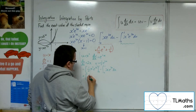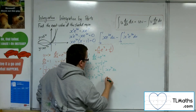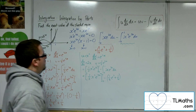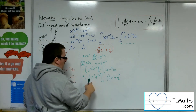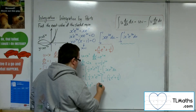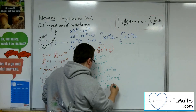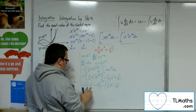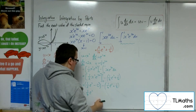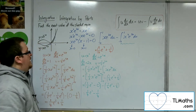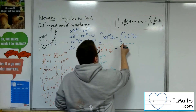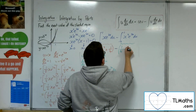So the second integral is 1 half x squared e to the 2x evaluated between 0 and 1, take away the result 1 quarter e to the 2 plus 1 quarter. Substituting in 1 gives 1 half e to the 2; substituting in 0 gives 0. So we have 1 half e to the 2 minus 1 quarter e to the 2, which is 1 quarter e to the 2, then take away 1 quarter. The second integral evaluates to 1 quarter e to the 2 minus 1 quarter.